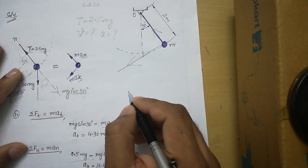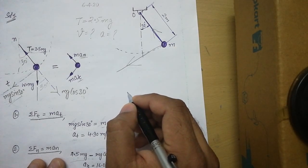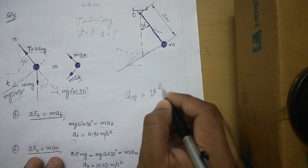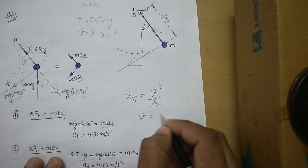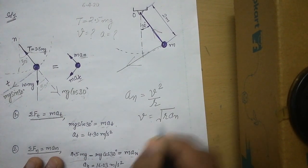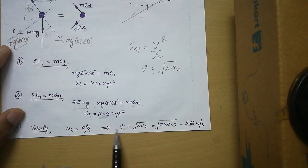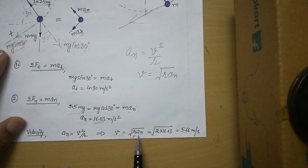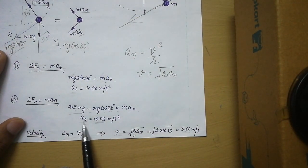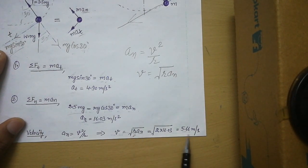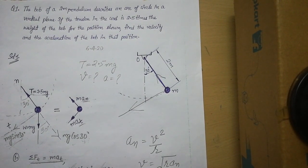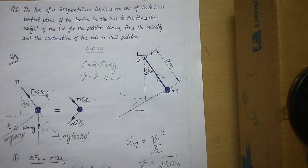To find the velocity, we use the equation from kinetics theory: normal acceleration equals v squared divided by r. Rearranging, v equals the square root of r times an. The radius r is the chord length of 2 meters, and an is the normal acceleration already calculated. Substituting these values gives the velocity of the bob in this position. I will discuss the second numerical in the next video — thank you.